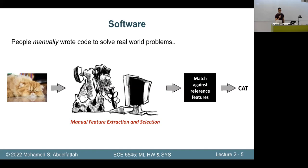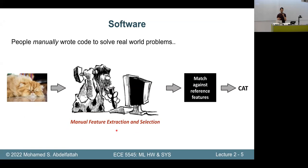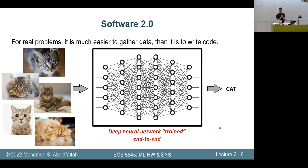Before diving in — software is driving hardware and machine learning is the new software. A long time ago, people manually wrote rules and hand-crafted features for things like image classification, looking for pointy ears to identify a cat. This didn't work very well. It turns out that for real problems, it's much easier to gather data than to write code. This is obviously deep learning — some people call it software 2.0.